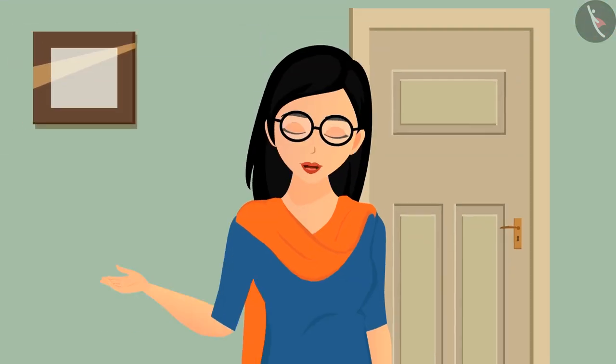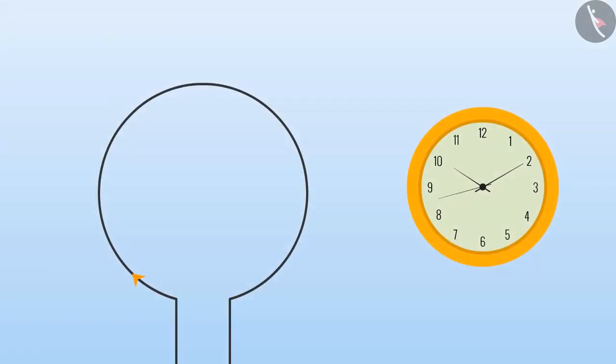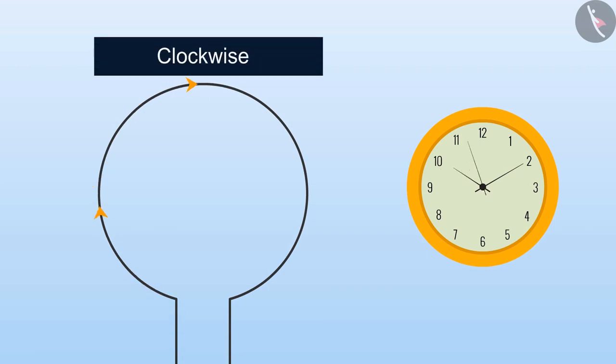The direction can be remembered easily using this method. If the current is flowing in the clockwise direction, then that side will be the south pole. It can be remembered by the arrows formed on the S.